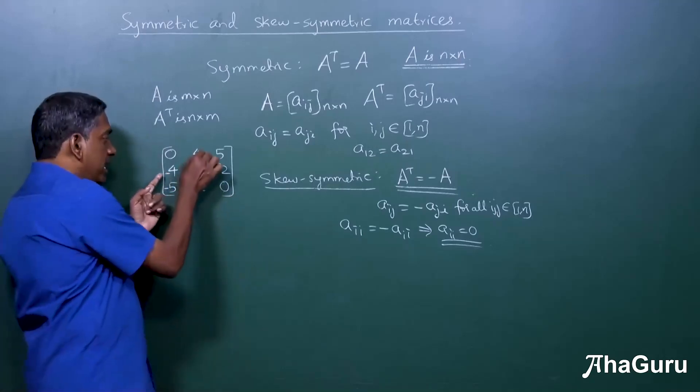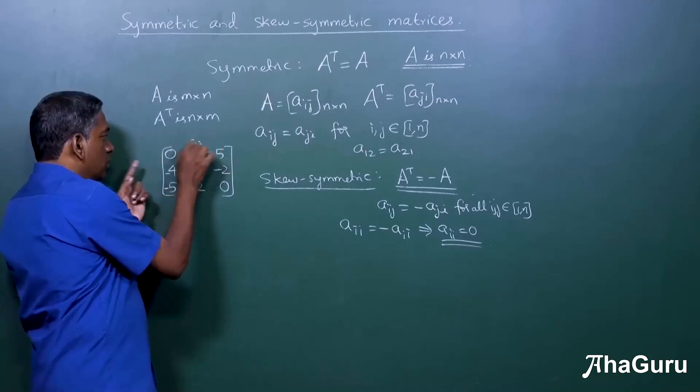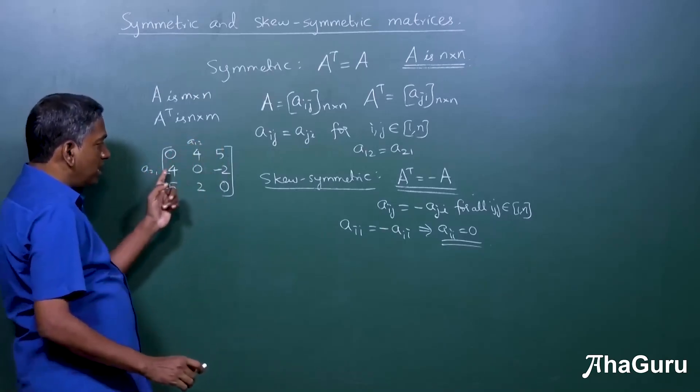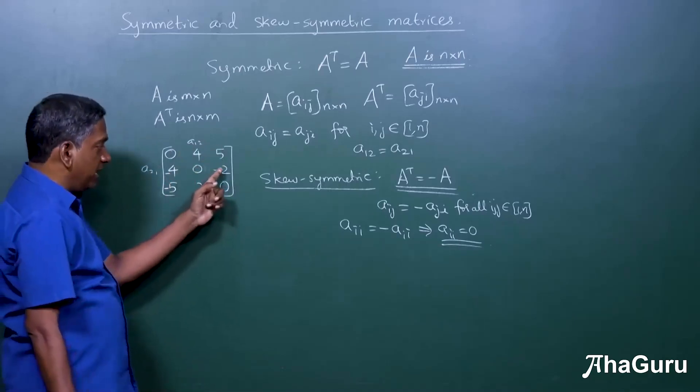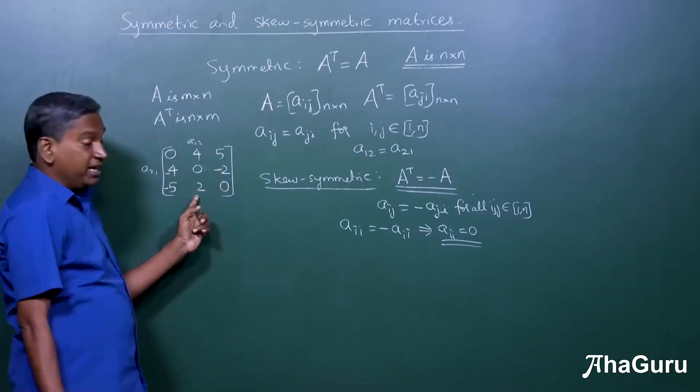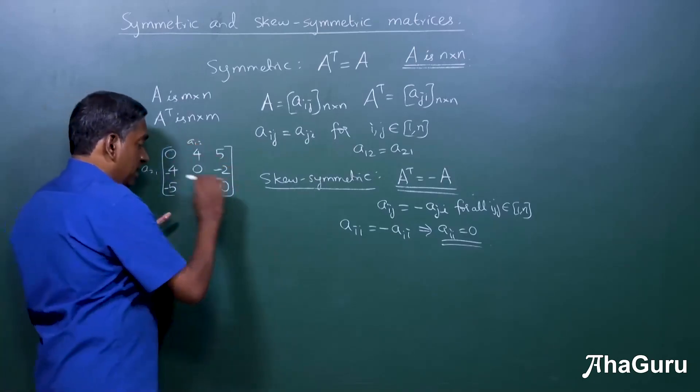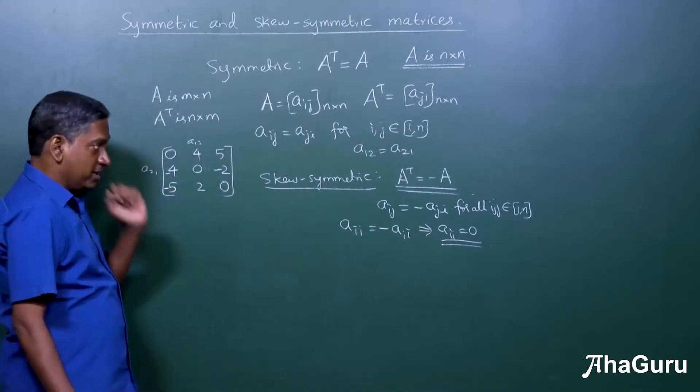So this is now a skew-symmetric matrix. Why? Aij and Aji, this is A11, A12, this is A21. So A12 and A21 are negative. A13 and A31 are negative of each other. A23 and A32 are negative. But in addition to that, all the diagonal entries must be zero. And this is a skew-symmetric matrix.